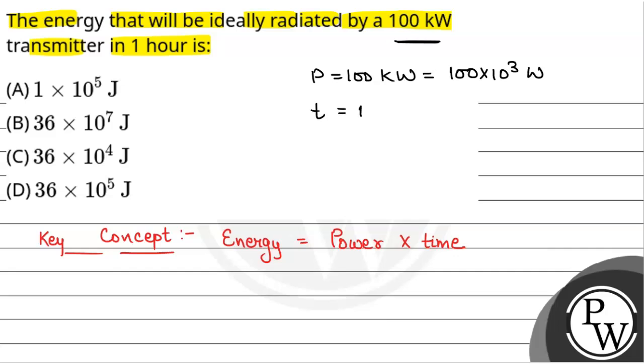Time that is given as one hour. So, energy radiated, that will be equal to 100 into 10 to the power of 3 watt into time is one hour.